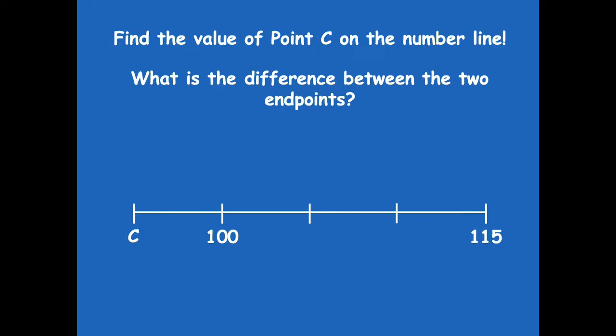Point C is 95. We can figure this out because we're going by 5s. Starting from 100 and checking by 10s would give 110 — too high. By 5s: 100, 105, 110, 115 — that works. So now going back 5 from 100 gets us to C, which is 95. To find the difference, subtract the endpoints: 115 minus 95 equals 20.